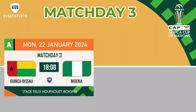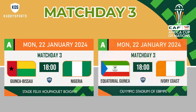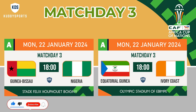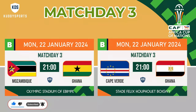Match Schedule and Fixtures for Match Day 3. Monday, 22 January 2024: Guinea-Bissau vs Nigeria. Equatorial Guinea vs Ivory Coast. Mozambique vs Ghana. Cape Verde vs Egypt.